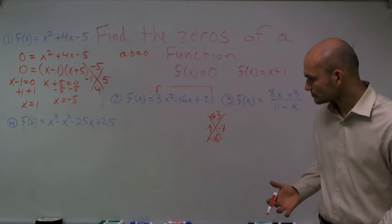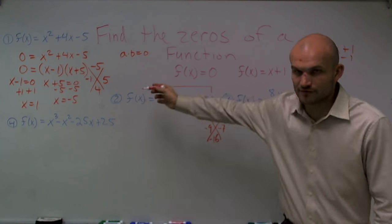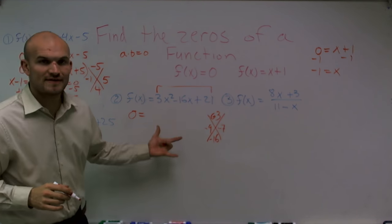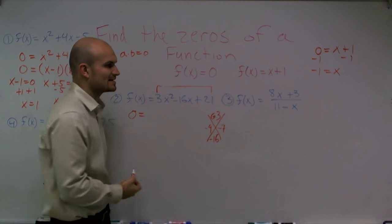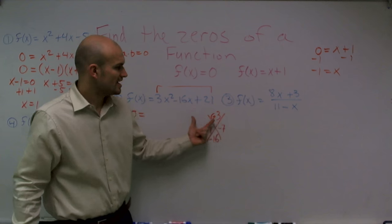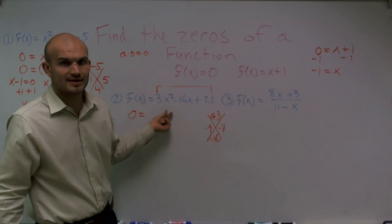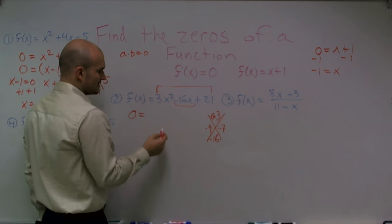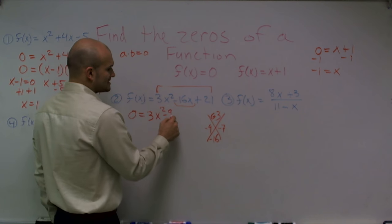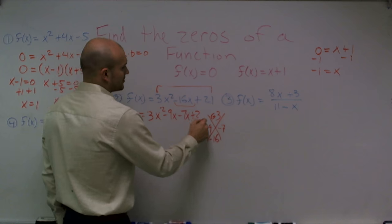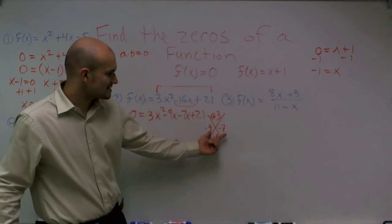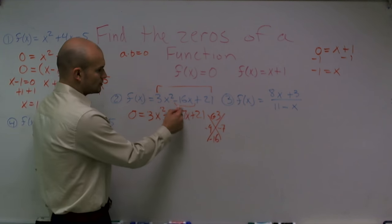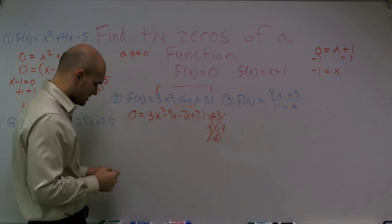To write this as factors, I plug 0 in for f of x. A lot of students want to say it's x minus 9 times x minus 7, but if you multiply that out, it does not equal the original expression. So instead, I rewrite my middle term using the two numbers, replacing negative 16x: 0 equals 3x squared minus 9x minus 7x plus 21. All I did was rewrite those two numbers to add up to negative 16, so I didn't change the expression.